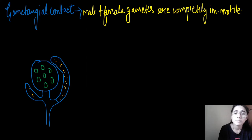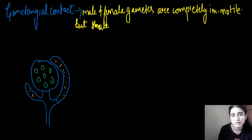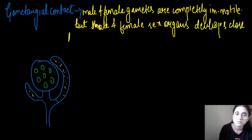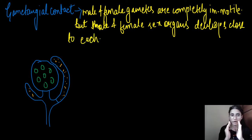The male and female gametes cannot move, but the male and female sex organs develop close to each other — they grow close to each other. Then they come in contact.